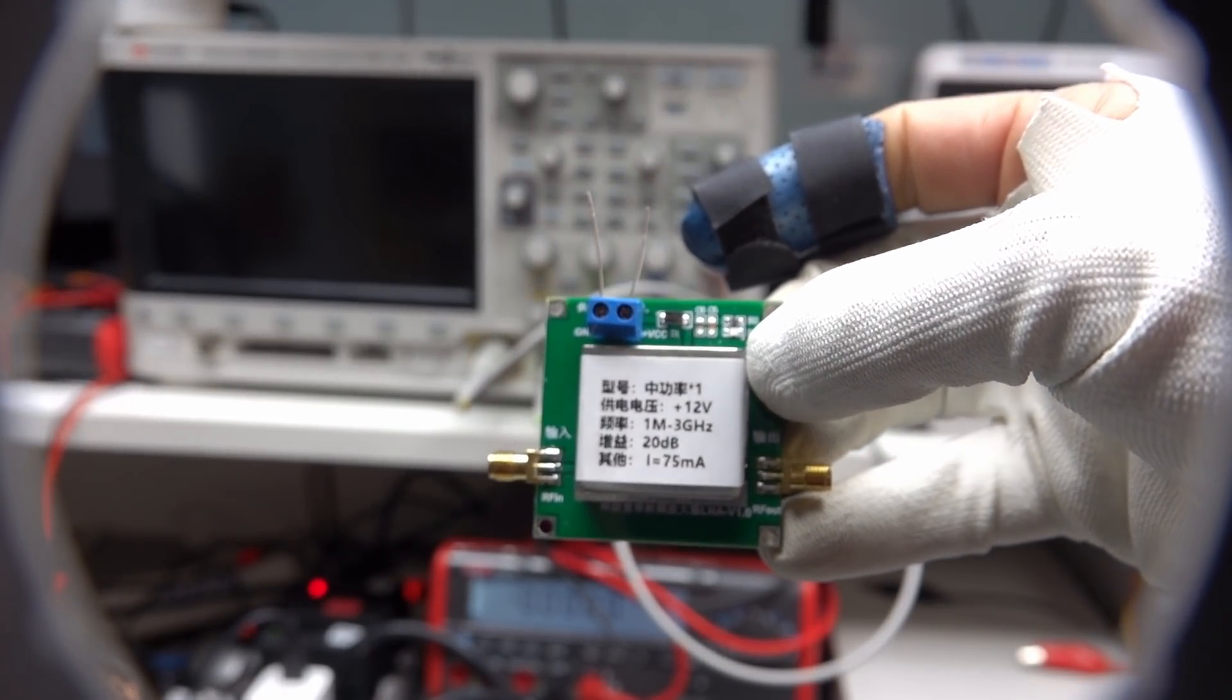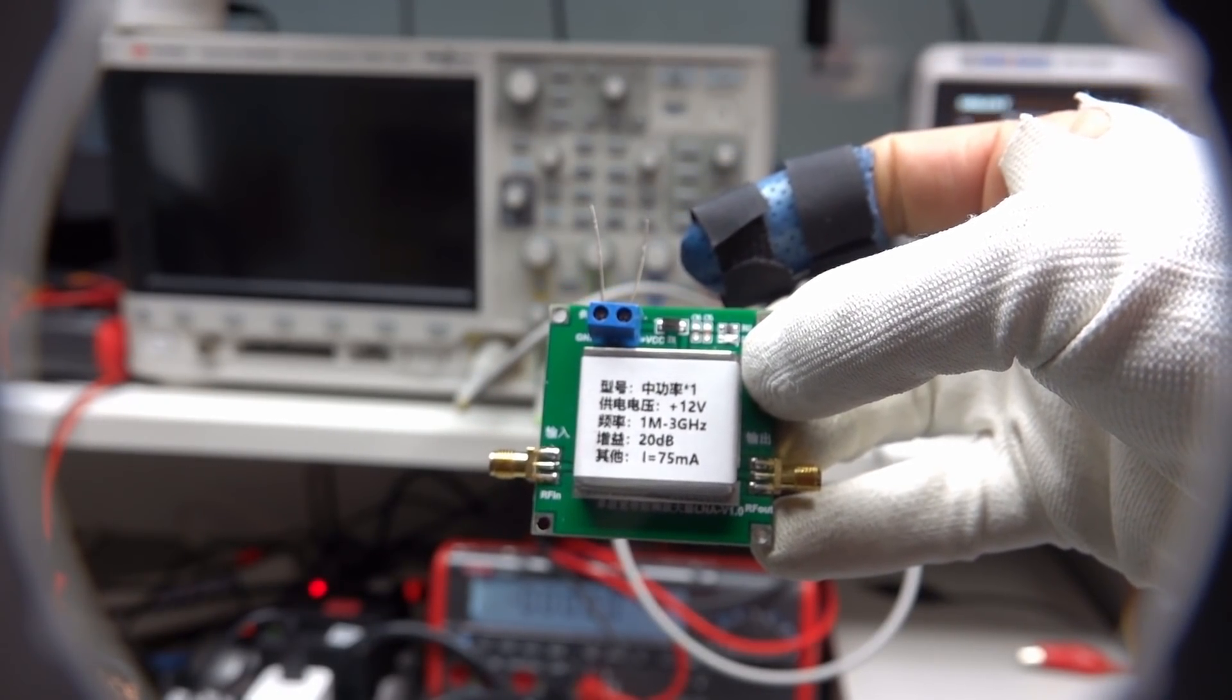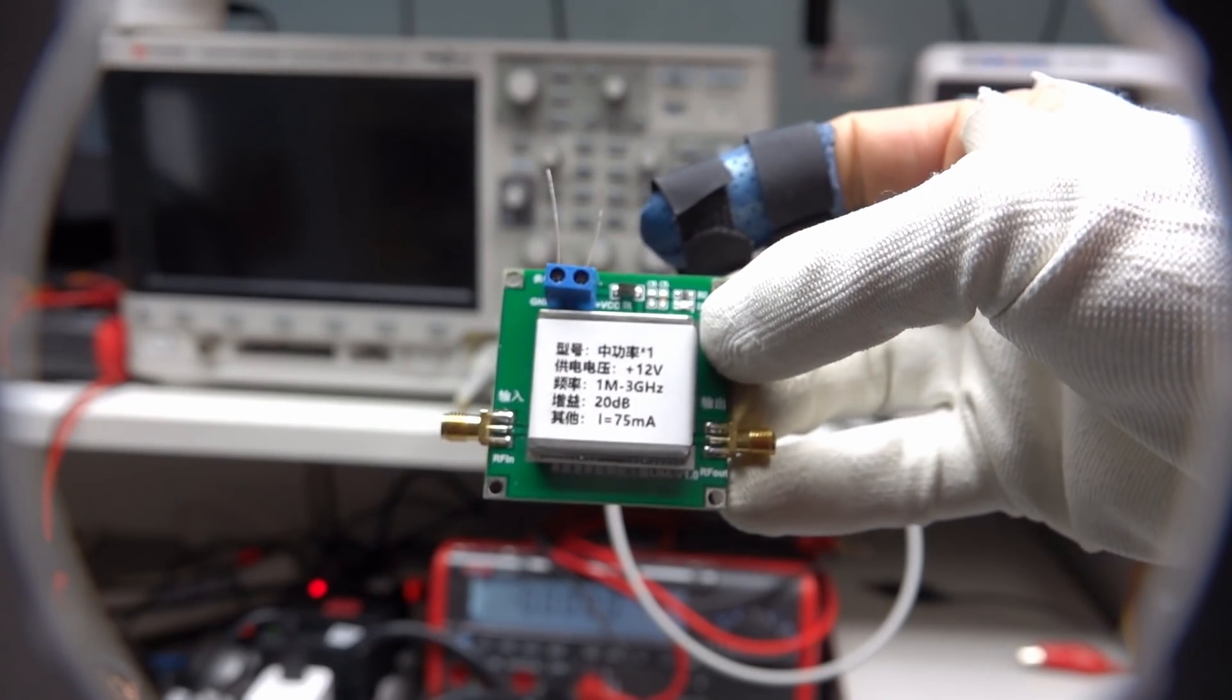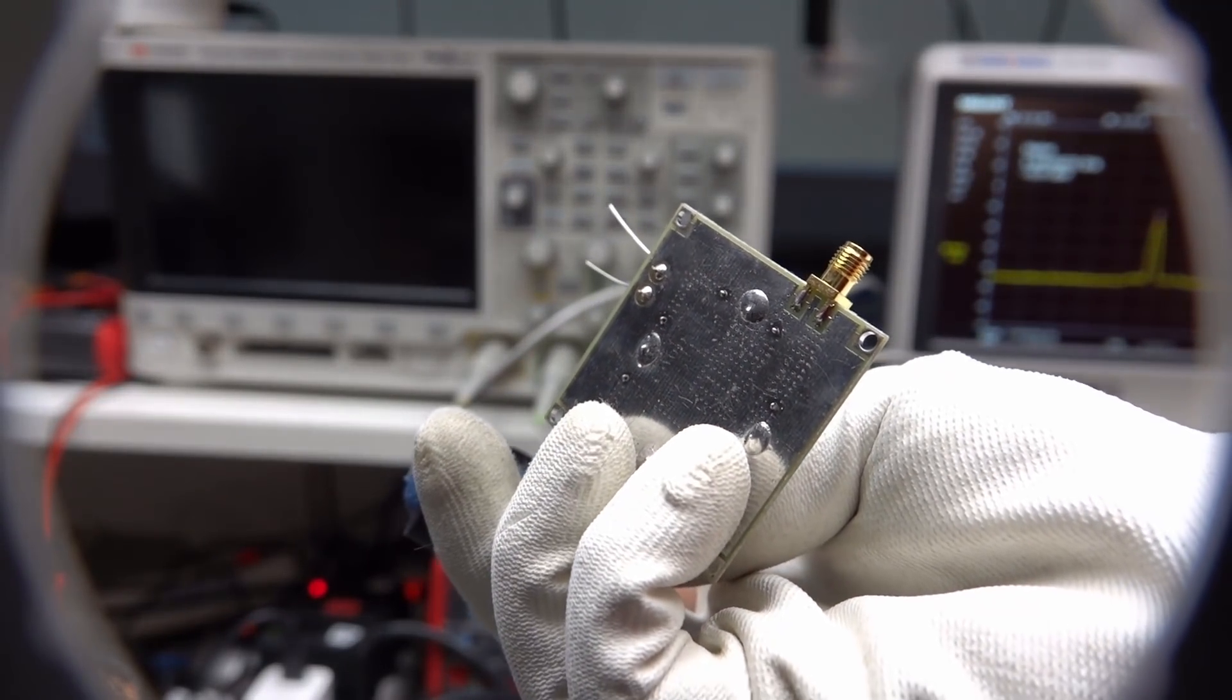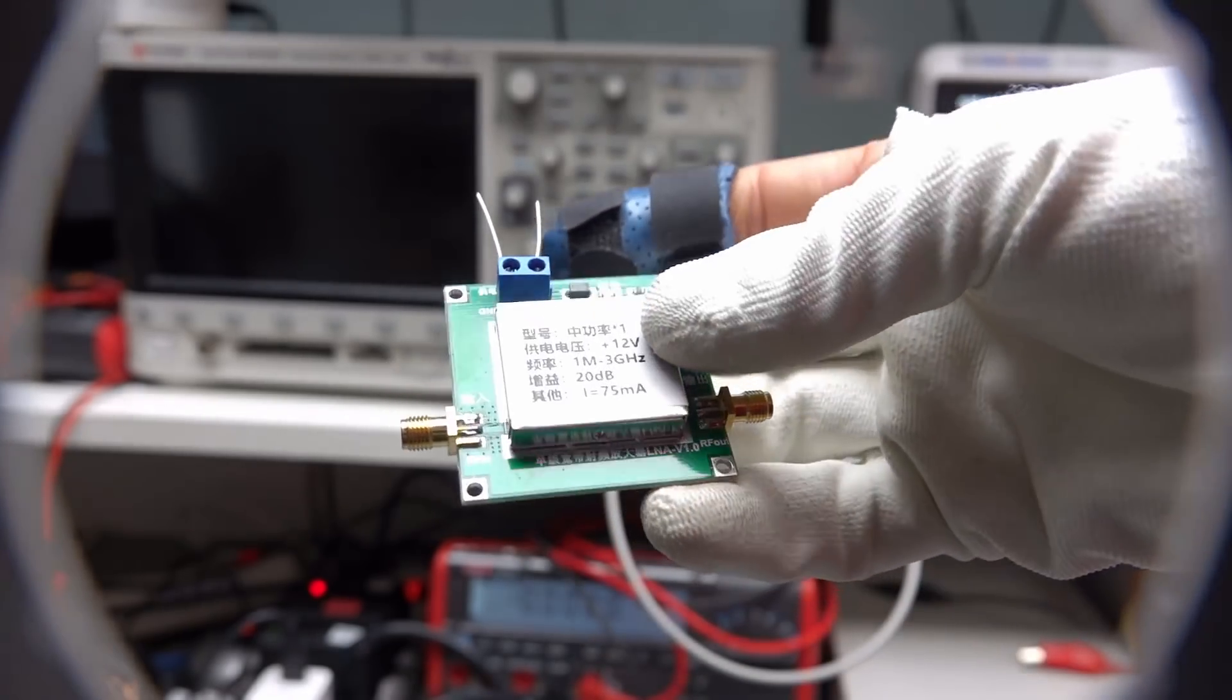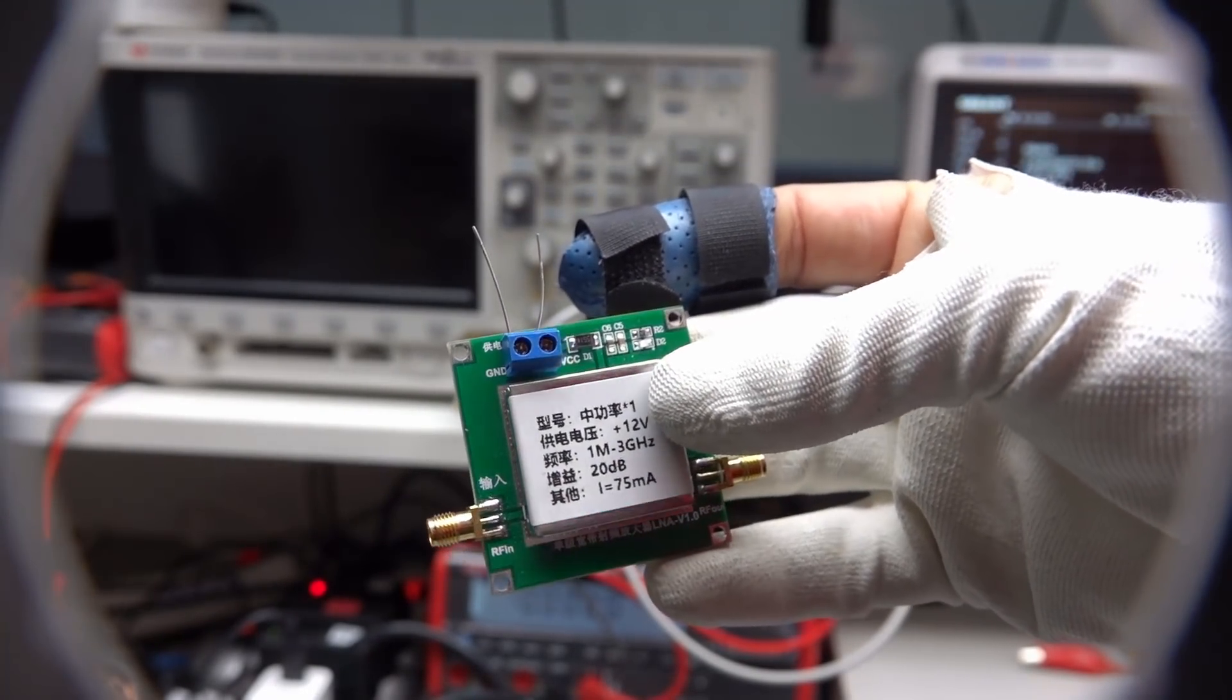Here I have one with 20 dB gain and 10 dBm output power. It runs on 12V, which is anyway needed for the last stage. Cool. So, let's connect this amplifier between the Pluto and the spectrum analyzer.